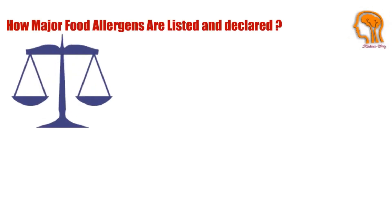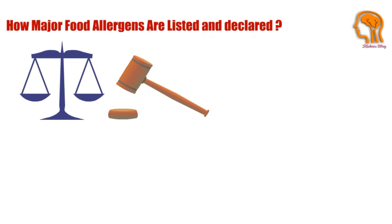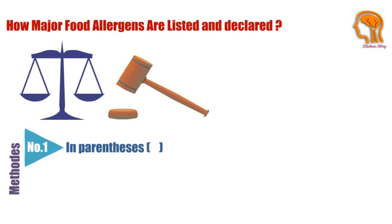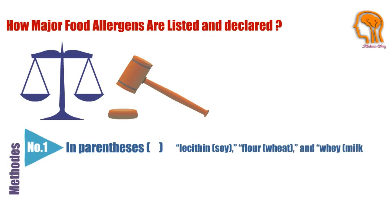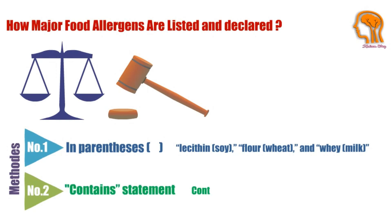The law requires that food labels identify the food source names of all major food allergens used to make the food. The name of the food source of a major food allergen must appear using one of two methods: Method one — in parentheses following the name of the ingredient, for example: lecithin (soy), flour (wheat), whey (milk). Method two — added after or next to the list of ingredients in a contains statement, for example: contains wheat, milk, and soy.